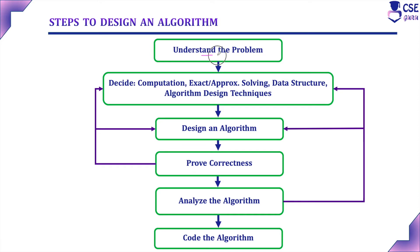The first step is to understand the problem, that is, understand the complexity of the given problem. Read the given problem description carefully and analyze with the available problem types. There are different problem types in algorithms, like sorting, searching, graph problems, etc. Based on the problem description, identify what type of problem it is. Work out simple examples with proper inputs, identify the input range in which it properly works, and analyze its strengths and weaknesses.